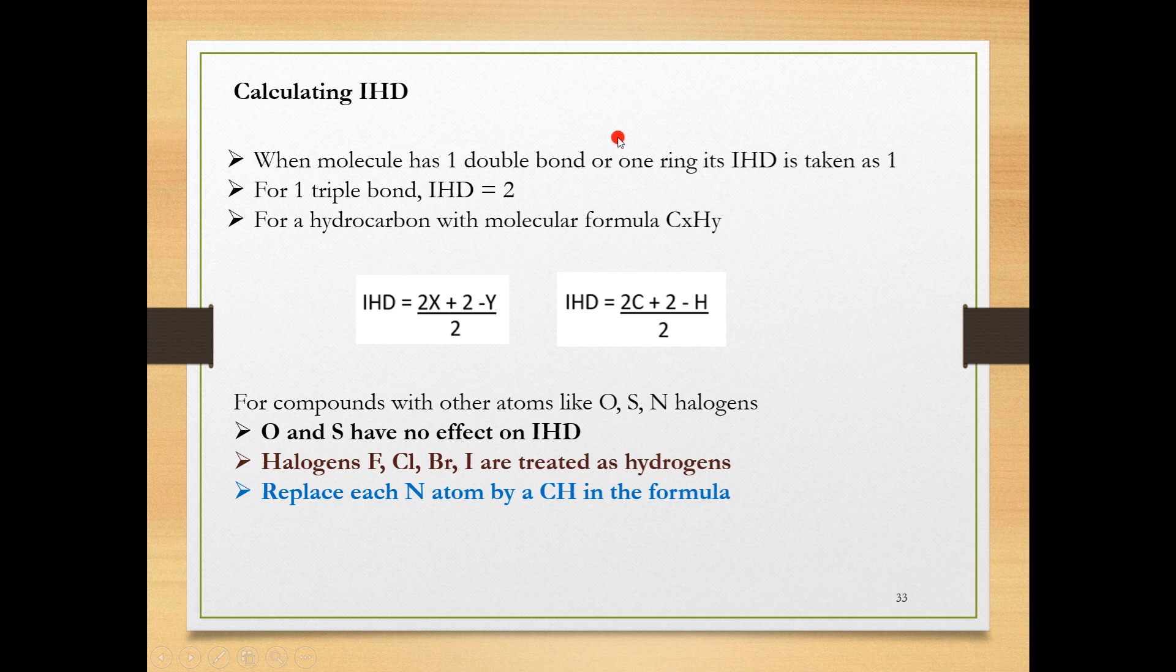When a molecule has one double bond or one ring, the IHD is taken as one, or vice versa. If you are calculating IHD and you get the answer as one, the molecule will be having either one double bond or a ring. Whether it is a double bond or ring will be decided by other spectroscopic data techniques. If the IHD is 2, then it could have one triple bond.